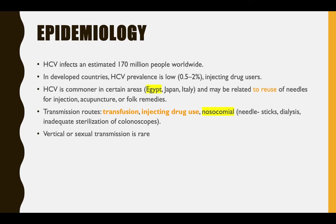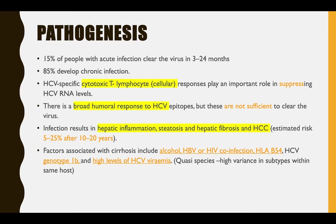The picture here shows someone who has had a needle stick injury — healthcare worker, blood transfusion. About 15% with acute HCV infection clear the virus within 3 to 24 months. The remaining 85% develop chronic infection. So in HCV there is a significant chronic form. A specific cytotoxic lymphocyte response plays an important role in suppressing RNA levels, along with a broad general antibody response to HCV.